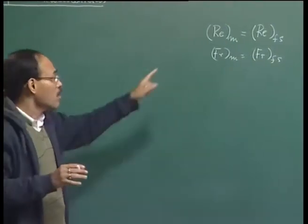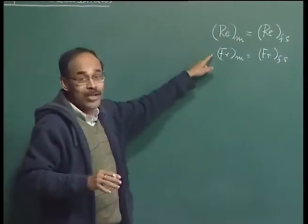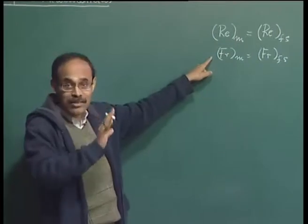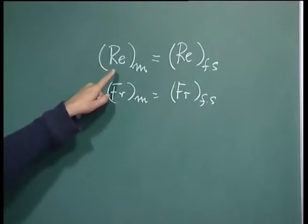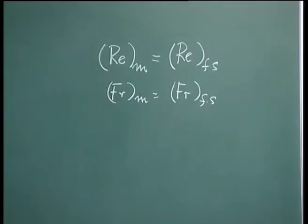Before we can do this, we have to respect geometrical similarity. Geometrical similarity plus satisfying Reynolds similarity as well as Froude similarity will ensure that the two systems are going to be dynamically similar.